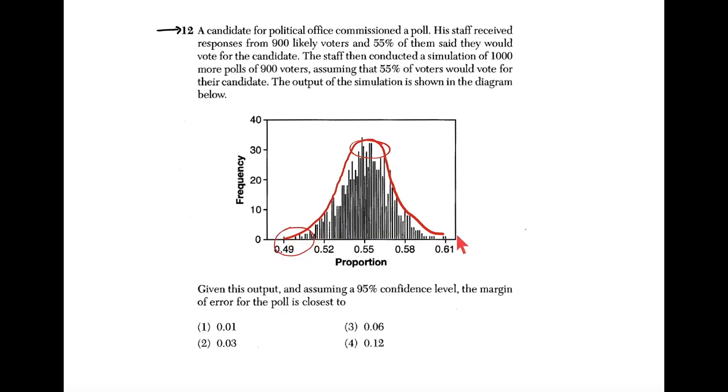To either side, there's some outliers. There's maybe three or four polls that resulted in around 61% of people voting yes and the same amount over here that resulted in around 49% of people voting yes. So that's what that graph represents.